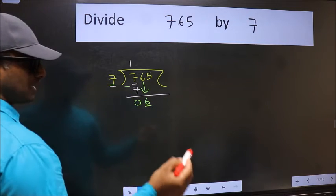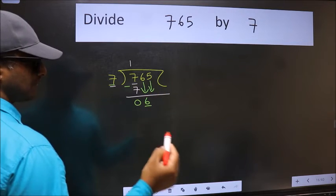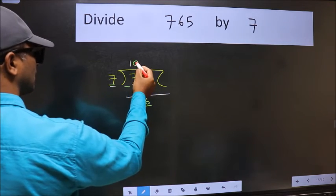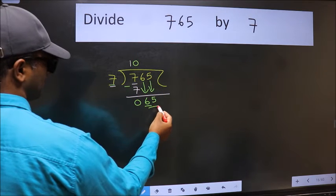So we should bring down the second number. And the rule to bring down the second number is we should put 0 here. Then only we can bring this number down. Now 65.